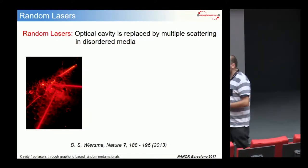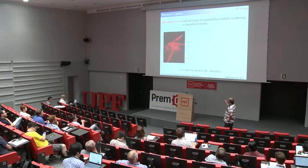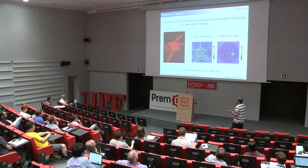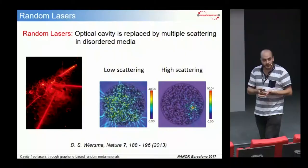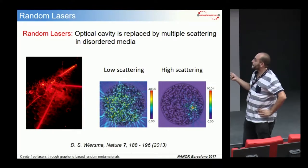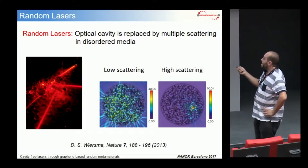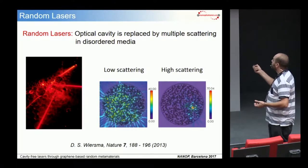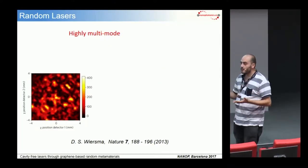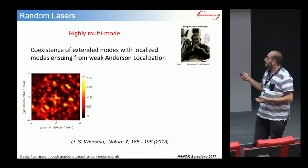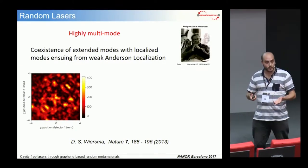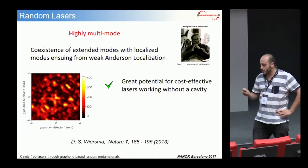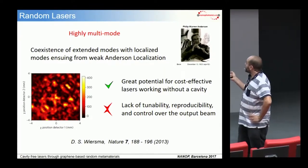Over a completely different direction, so-called random lasers replace the optical cavity by multiple scattering in disordered media, enabling cavity-free stimulated emission of radiation. Since the system is random, the output beam heavily depends on the disorder properties. When scattering is very low, extended modes dominate; when scattering is high, localized spots appear. In general, the dynamics and output beam are highly multimode due to the coexistence of extended and localized modes arising from weak Anderson localization. Random lasers offer great potential for cost-effective cavity-free lasers, but they inherently lack tunability, reproducibility, and control over the output beam.